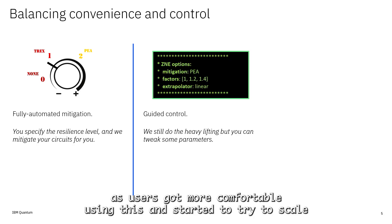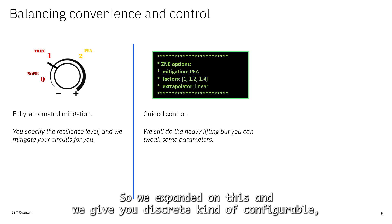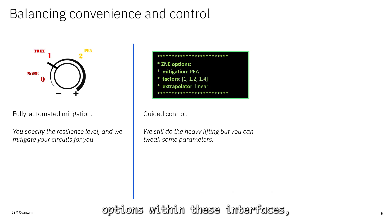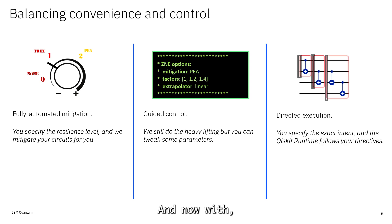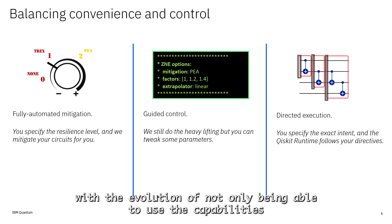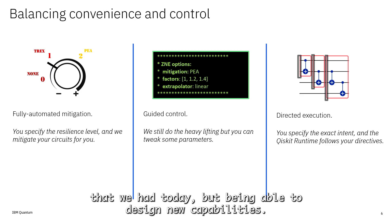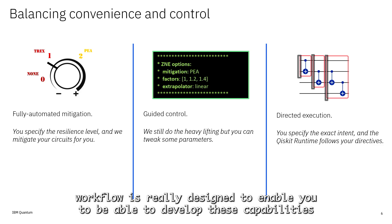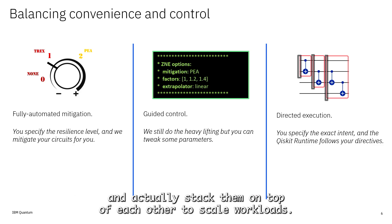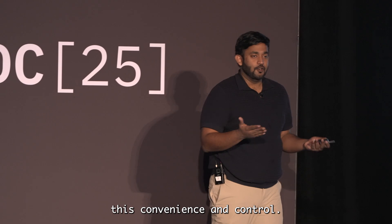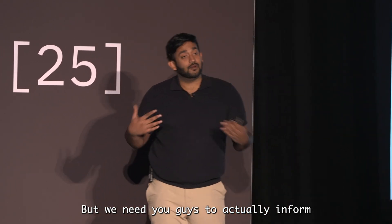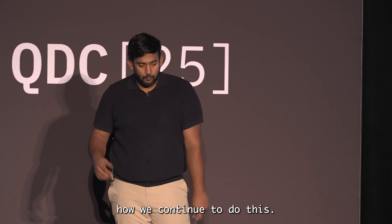As users got more comfortable using this and started to try to scale workloads, they needed more knobs, so we expanded on this and gave you discrete configurable options within these interfaces to customize different methods. Now with the evolution of not only using the capabilities we have today but also designing new capabilities with the executor workflow, our goal is to enable you to develop these capabilities and actually stack them on top of each other to scale workloads.